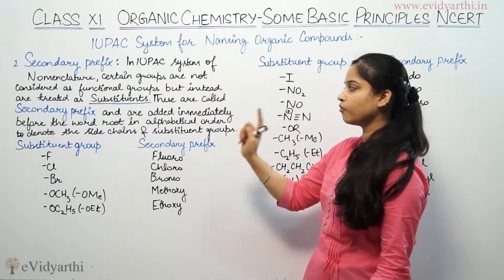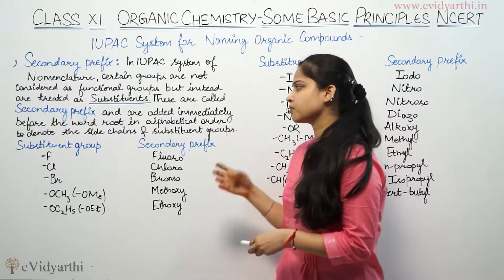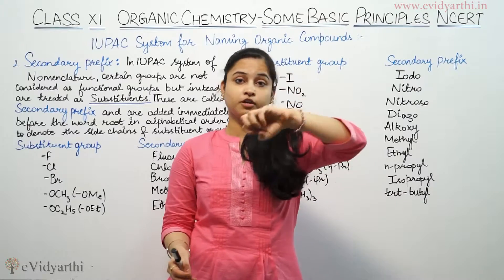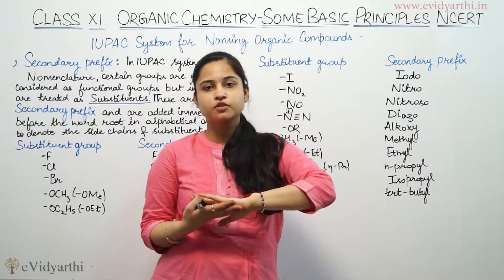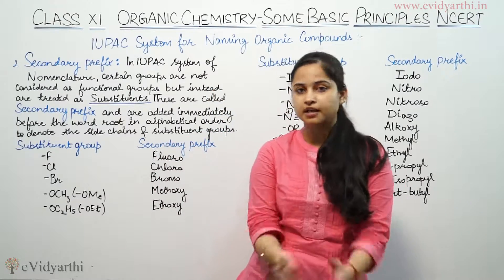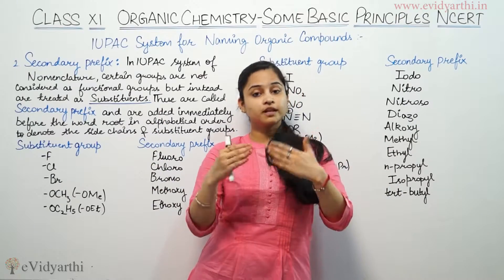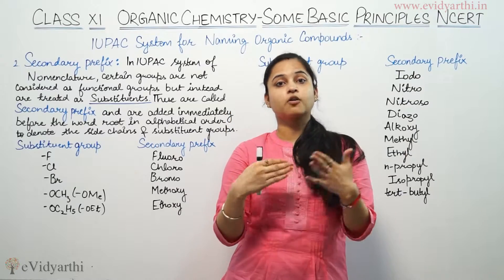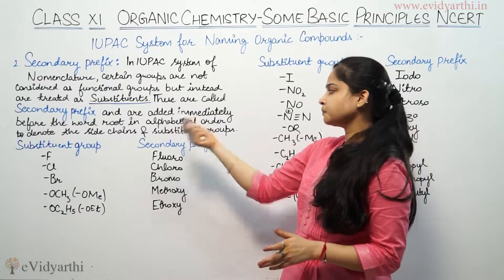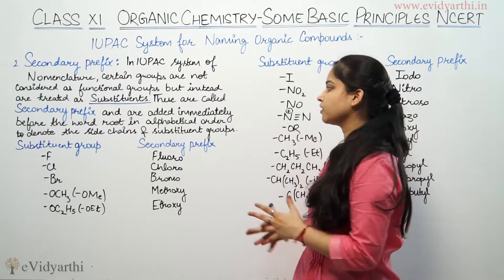Secondary prefixes are immediately added before the word root in alphabetical order to denote the side chain and substituent groups. We can also consider the primary prefix and then find the secondary prefix. Remember, secondary prefixes are arranged in alphabetical order when there are two or three present, and they are denoted for the side chains.